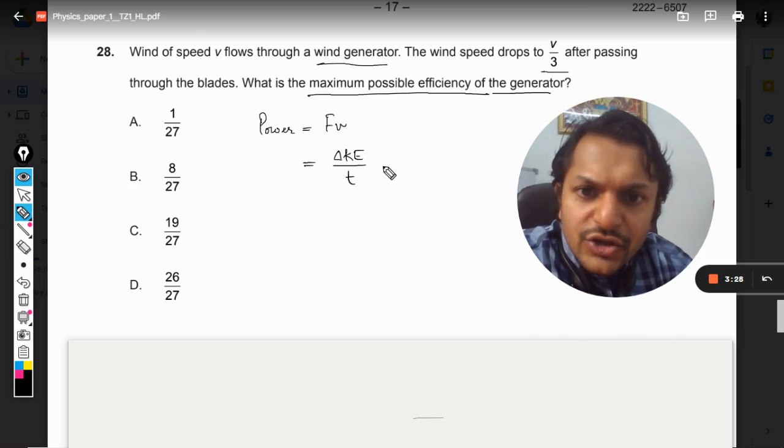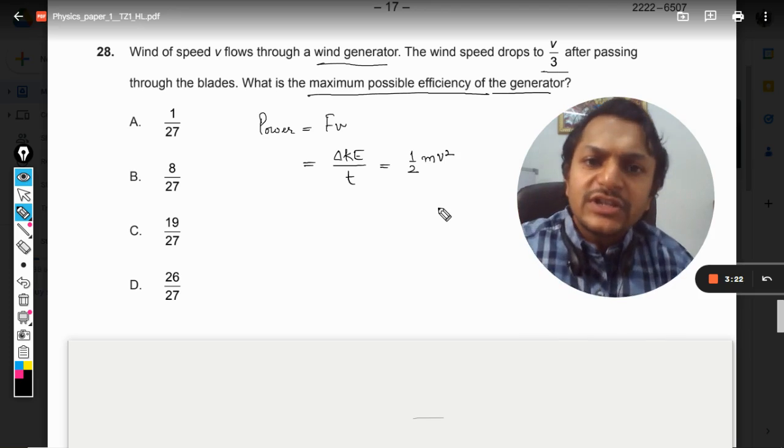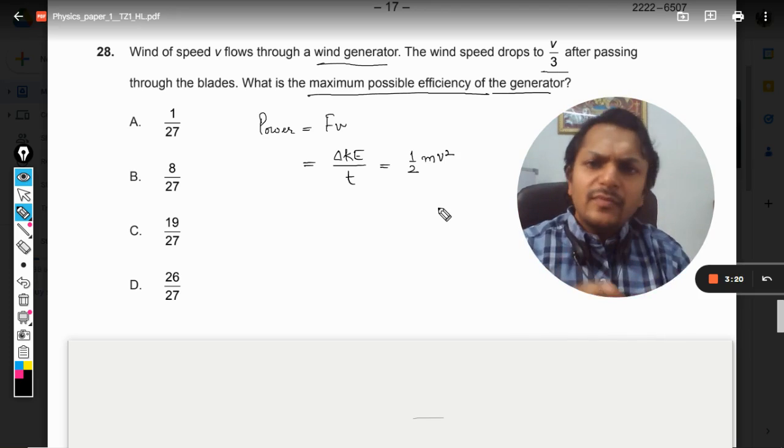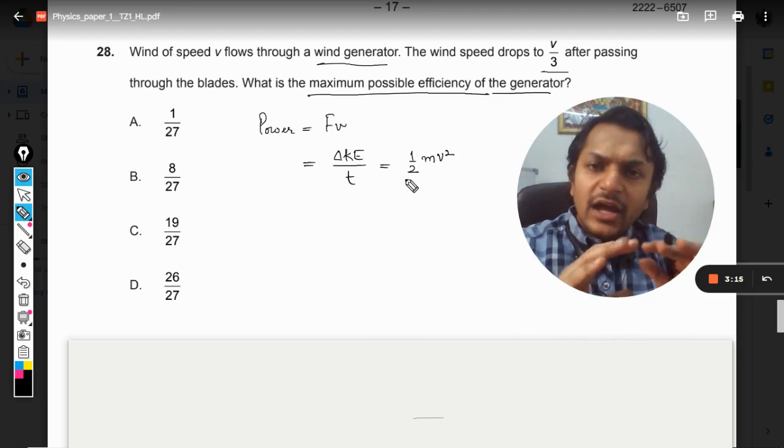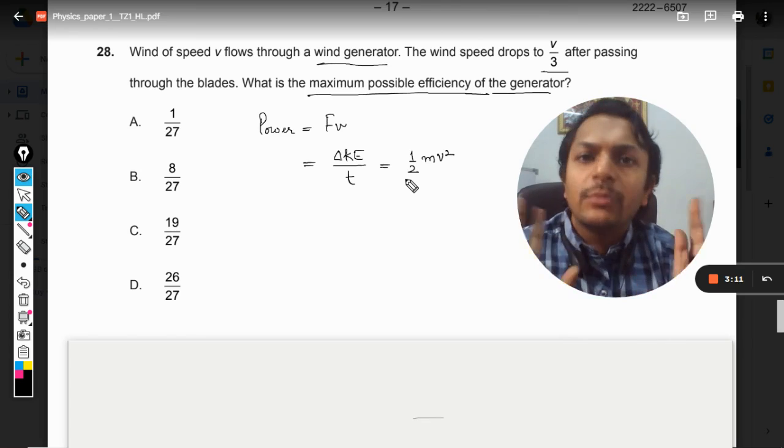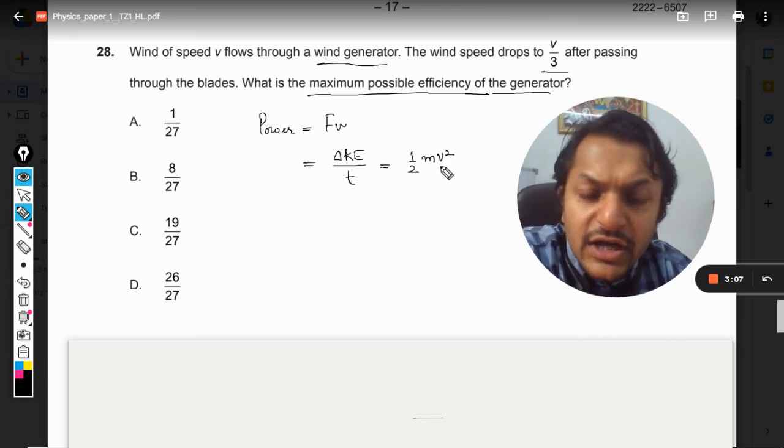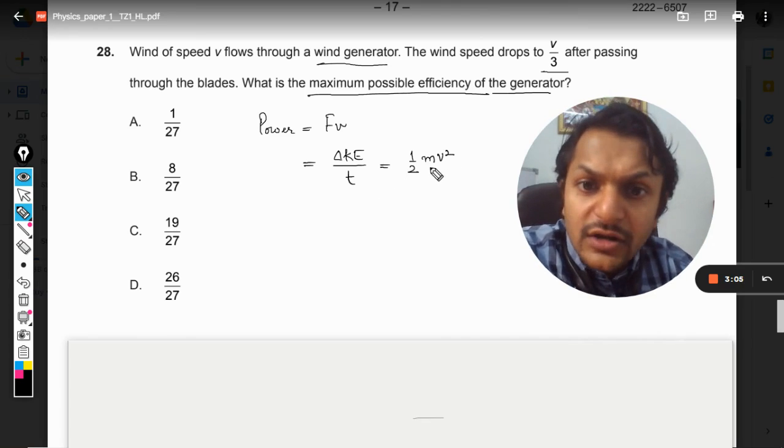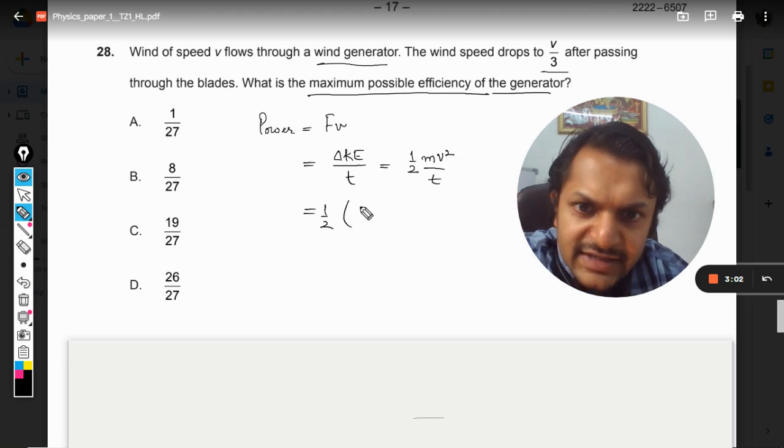This can be written as (1/2)mv² divided by t. I'm not taking the difference between two powers - just deriving a general formula for power. So (1/2)mv²/t becomes (1/2)(m/t)v².